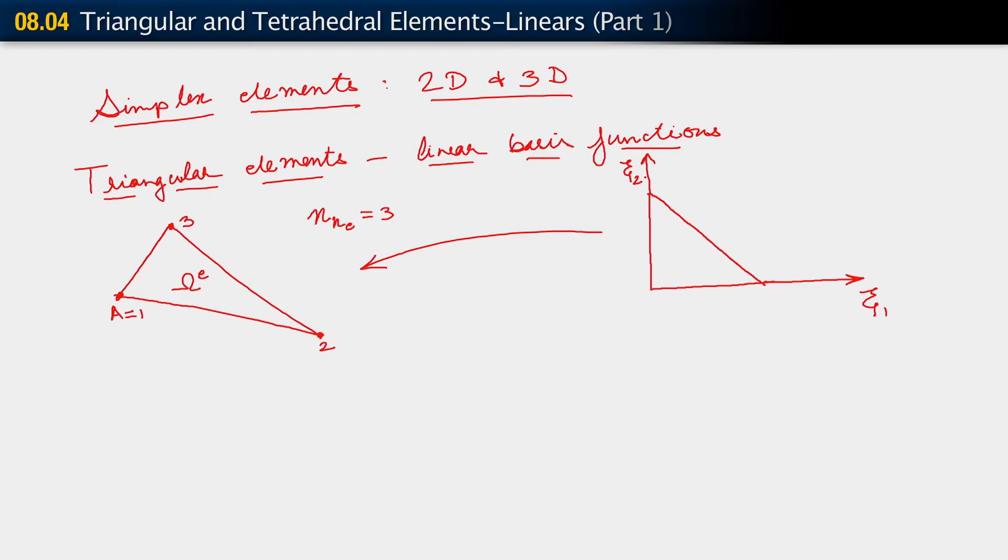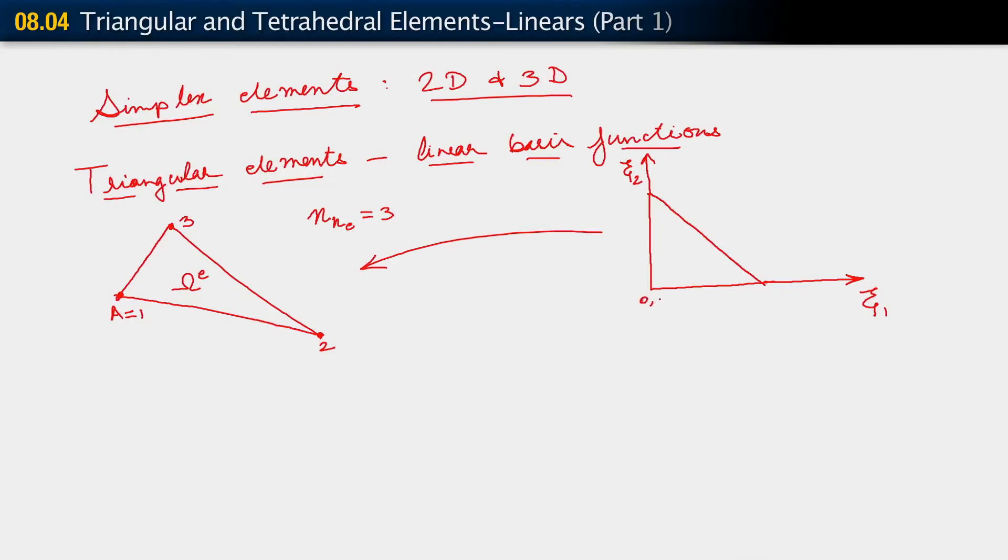Except, well, here's one of the differences. In the case of triangular elements, this parent domain is not bi-unit, it is simply a unit domain. So then, this is the point 0 comma 0. This is the point 1 comma 0. C1 equals 1, C2 equals 0, and that's the point 0 comma 1. It's a unit domain.